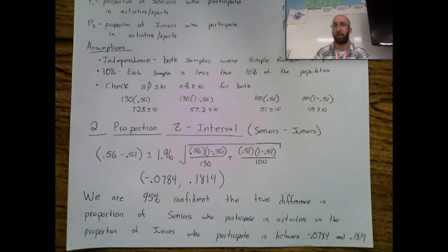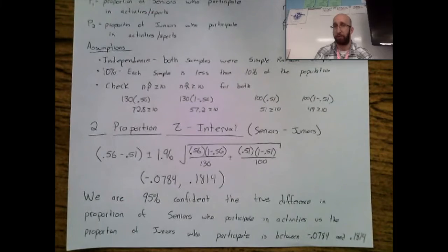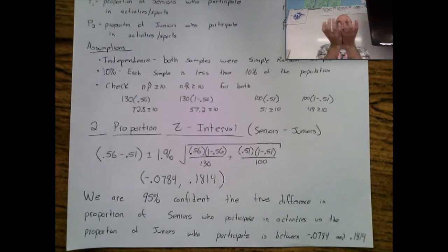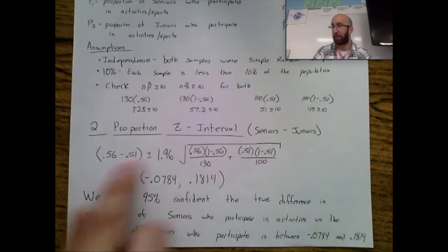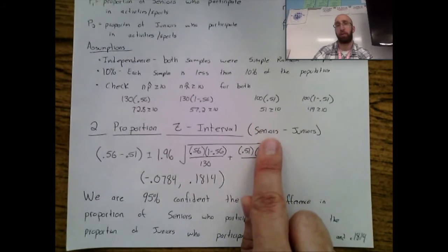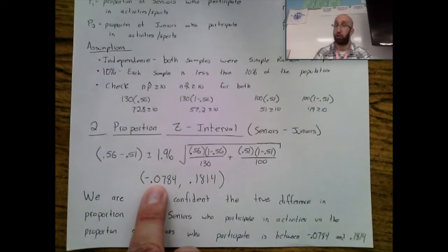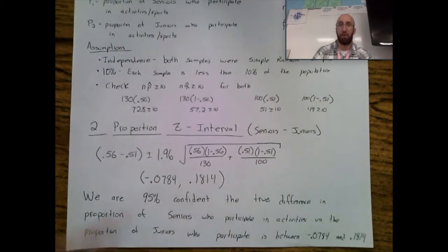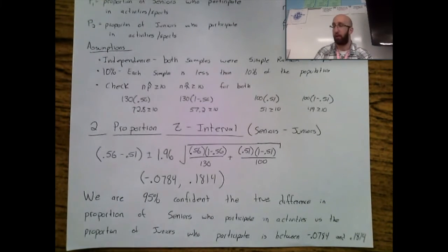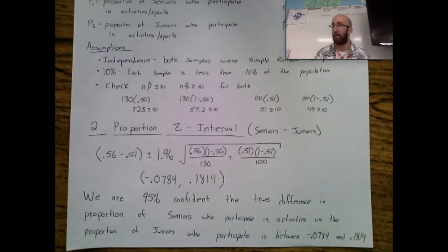Zero is included in this interval, which is an interesting observation. If I'm finding the difference between seniors and juniors, the only way to get zero is if the proportion of seniors equals the proportion of juniors. So this interval suggests it's very possible that seniors are higher, juniors are higher, or they're equal. If the interval were entirely positive, you'd know for sure seniors is definitely larger than juniors.